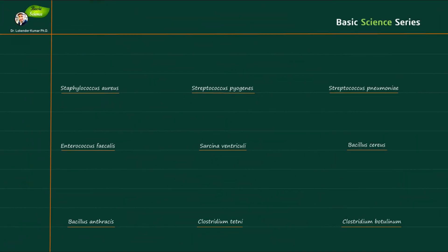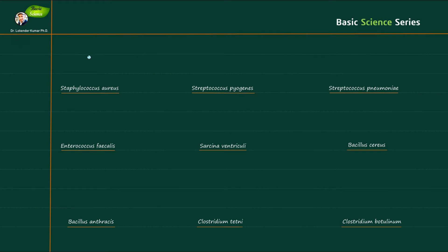Hi everyone, welcome to Basic Science Series. I'm your host Lokandar Kumar, and today we're going to discuss the shapes of different microorganisms. I have written names of different microorganisms here, such as Staphylococcus aureus, Streptococcus pyogenes, Streptococcus pneumoniae, and Enterococcus faecalis. It's important to understand the shape of different microorganisms because it's essential when identifying them during Gram staining.